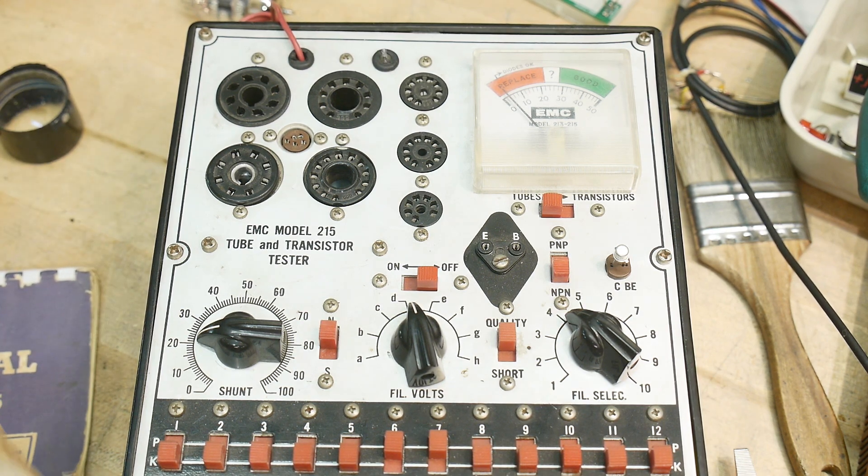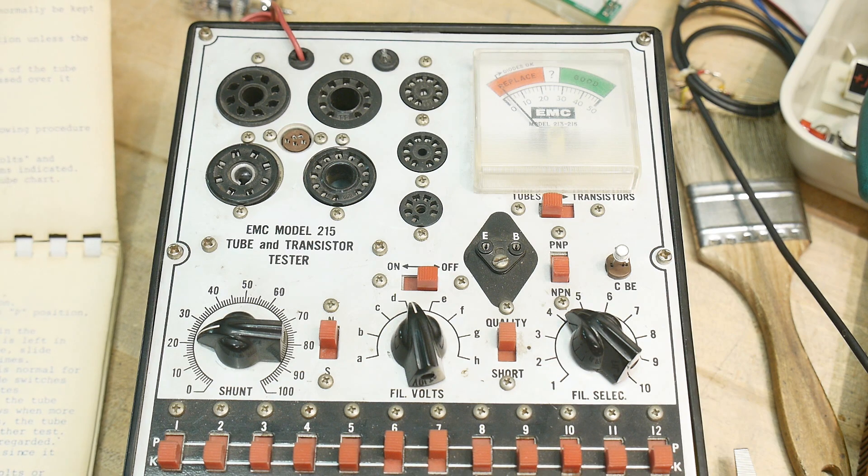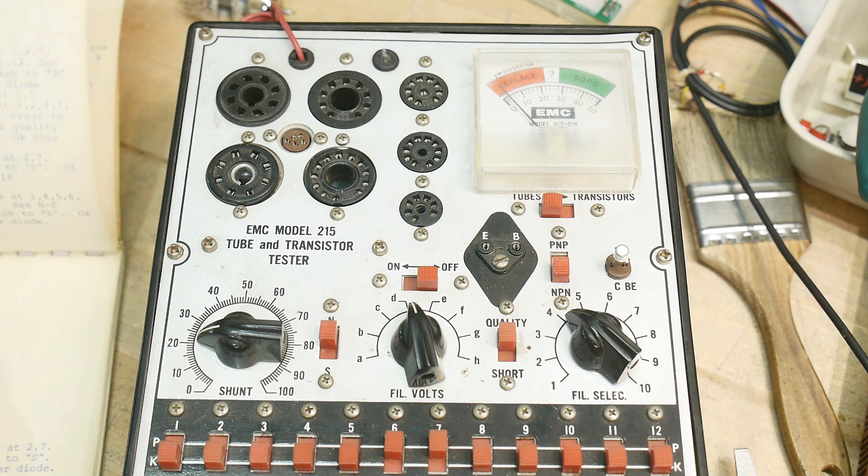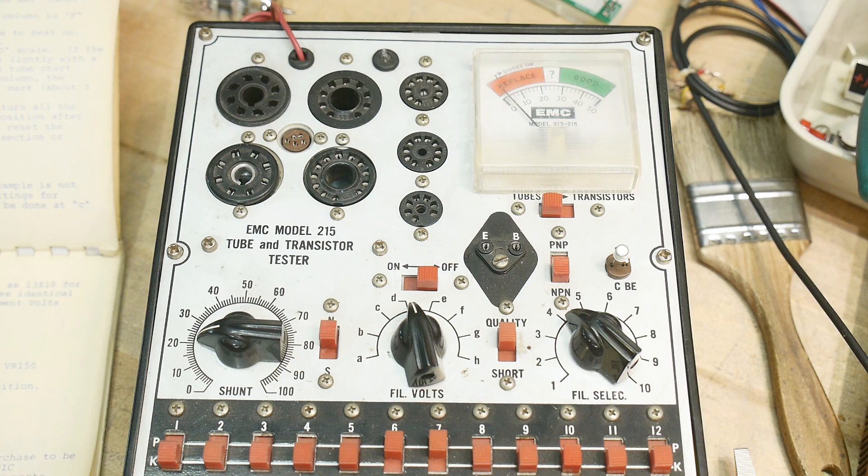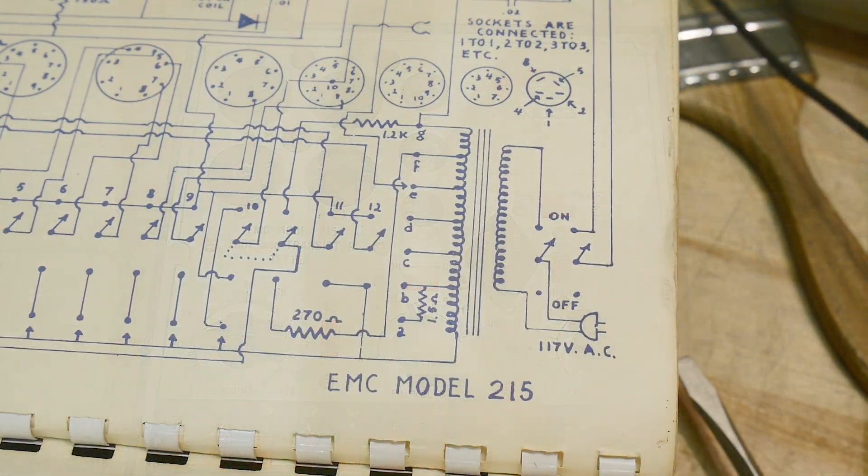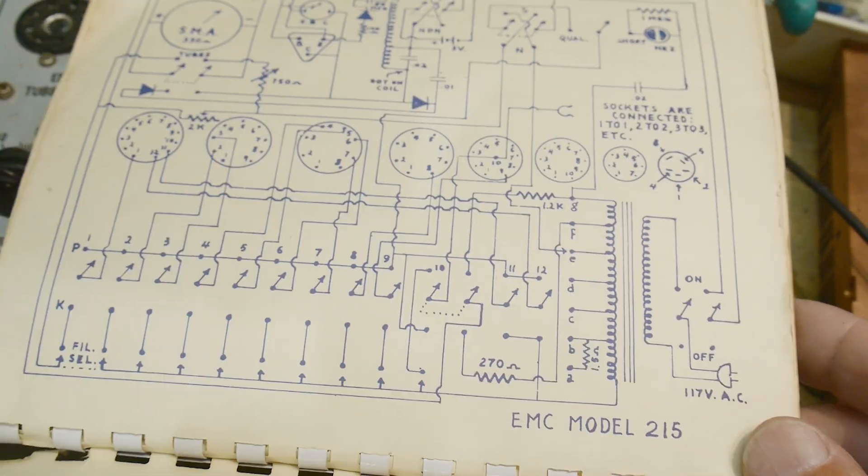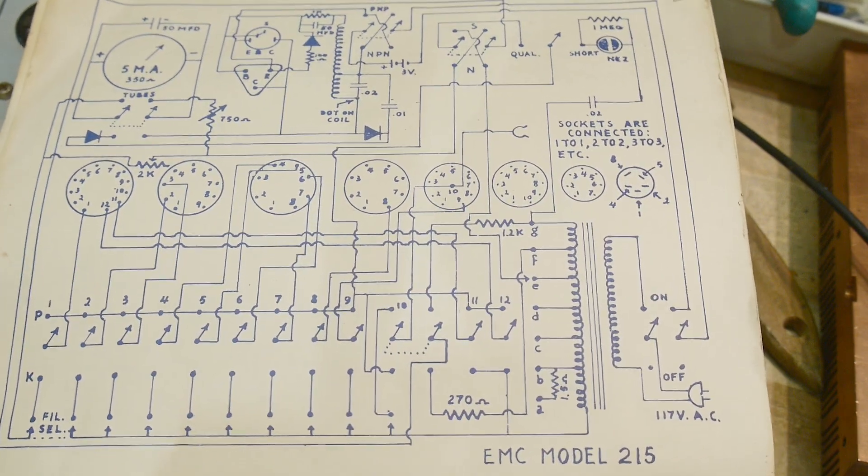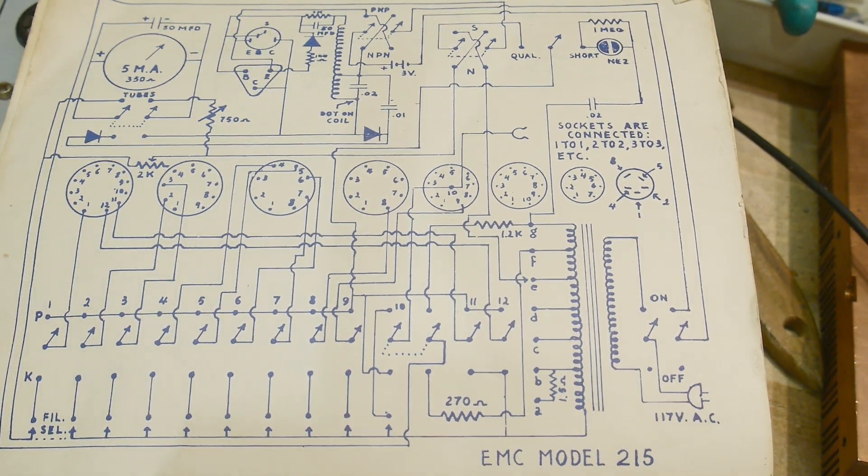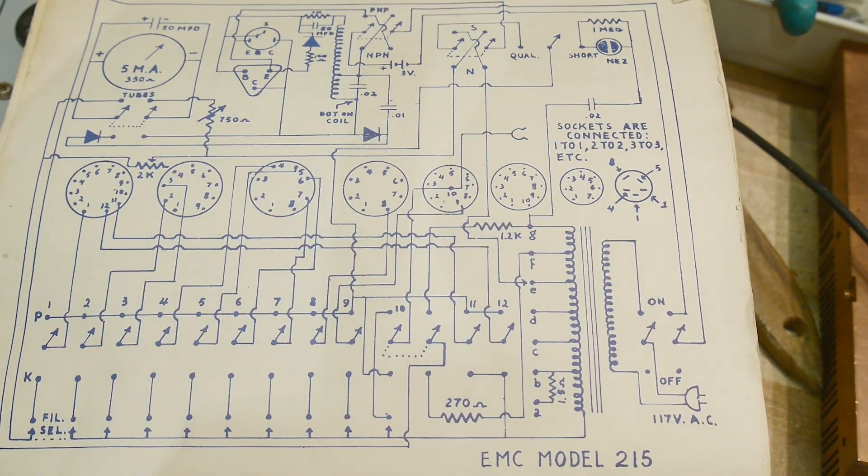Now we need to read the instructions here for how to test transistors. Let's see any quality test. Hmm. I don't see instructions. All right. So after looking at the schematic here, this is the schematic for this device. The circuit that runs the diode test seems to have a three volt battery in the circuit.